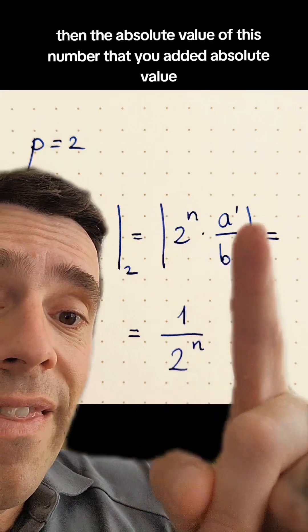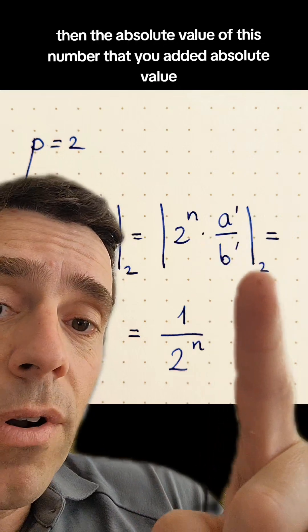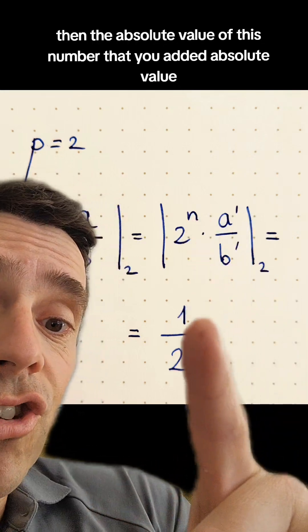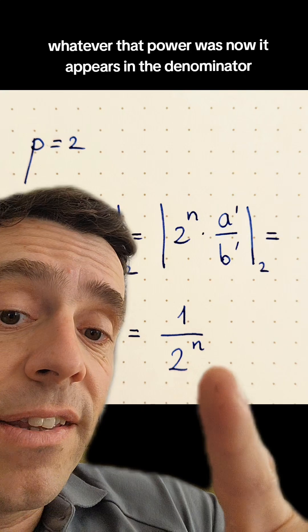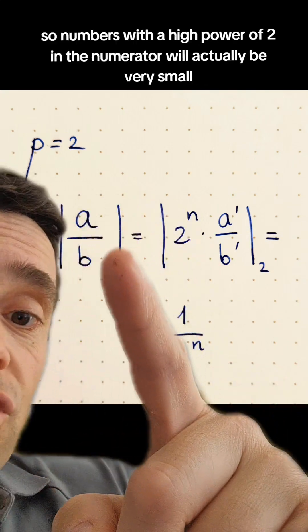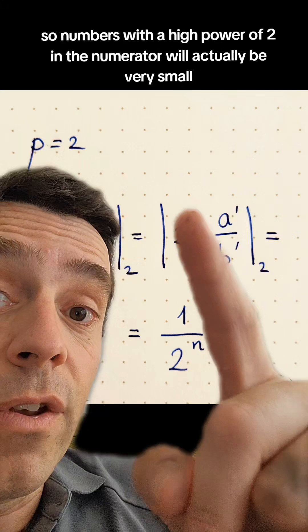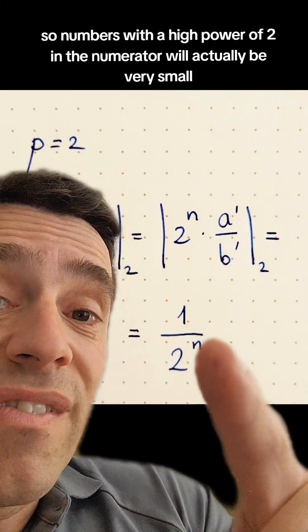And if I have that, then the absolute value of this number, the 2-adic absolute value, is going to be 1 over 2 to the n, whatever that power was, now it appears in the denominator. So numbers with a high power of 2 in the numerator will actually be very large.